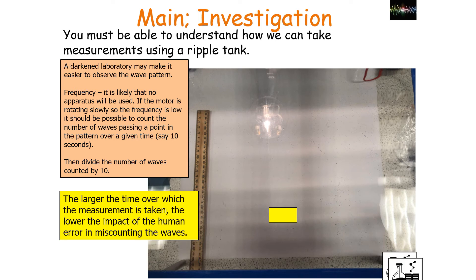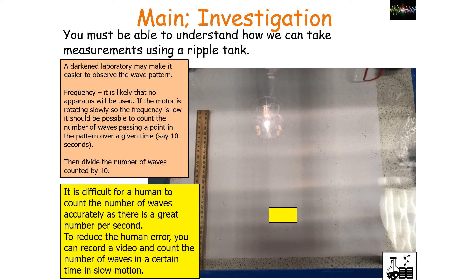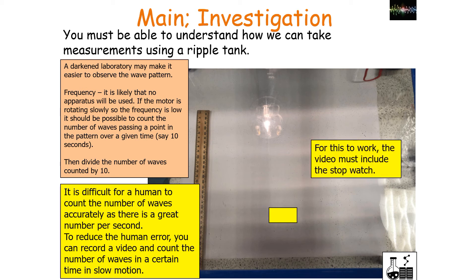The larger the time taken for the measurement, the lower the impact of human error in miscounting the waves, so the larger the time you take and the larger the number of waves you count, the lower the percentage uncertainty. Since it's difficult for a human to count waves accurately at high frequency, you can record a video and count the number of waves in a certain time by slowing down the video — however, the video must include a stopwatch.